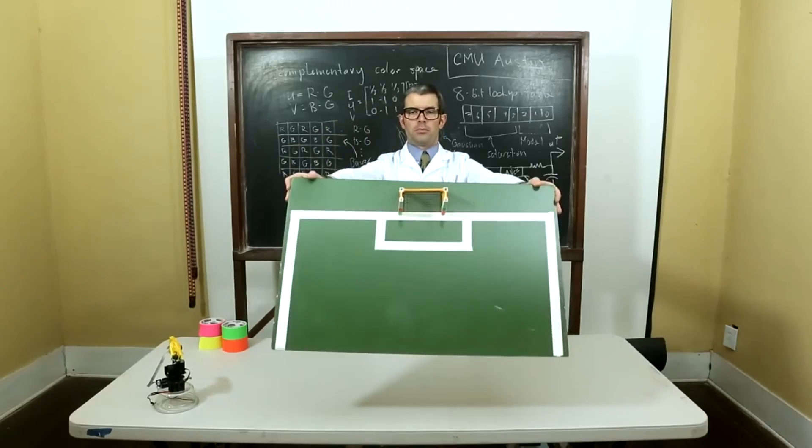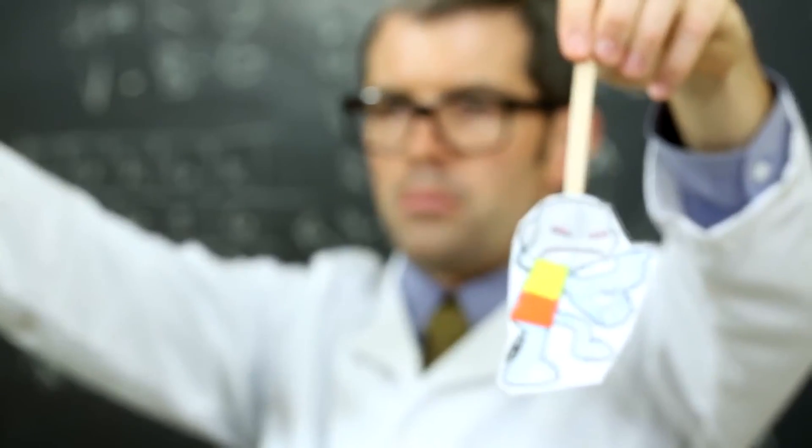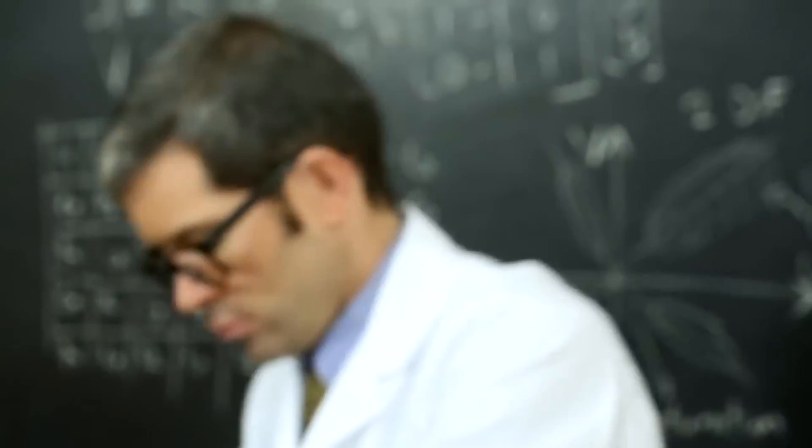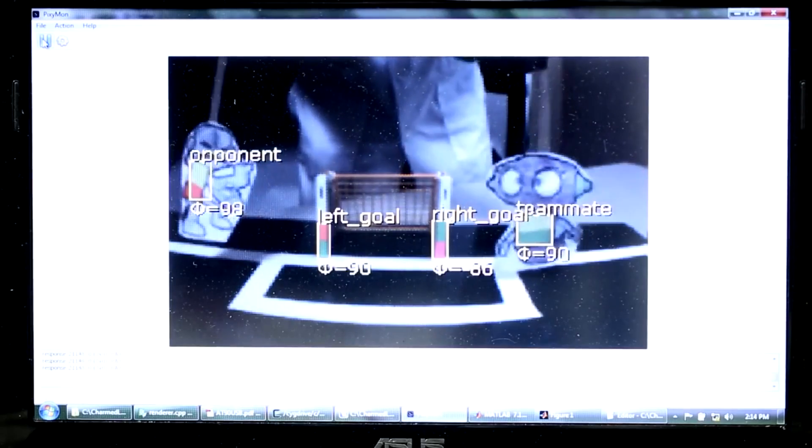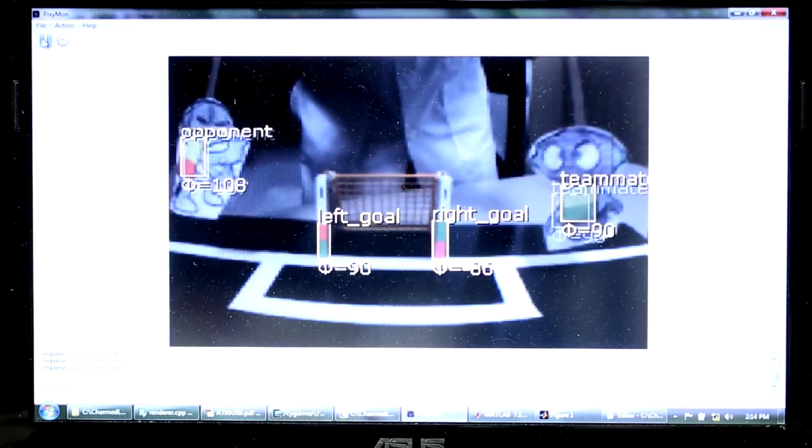Color codes are robust. Many different objects can be identified in this way. More complicated color codes can be used to identify hundreds of different objects. And Pixie can do all of this at 50 frames per second.